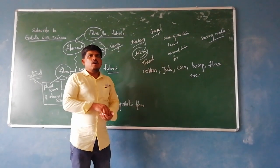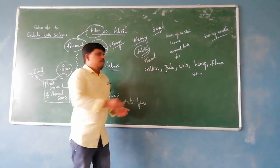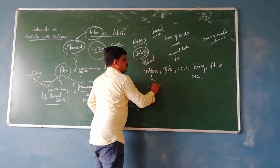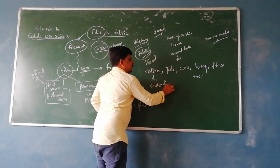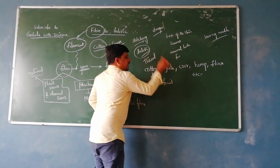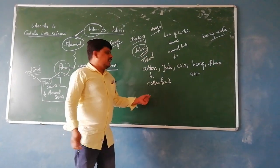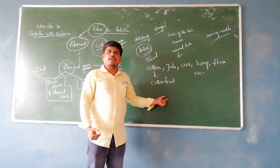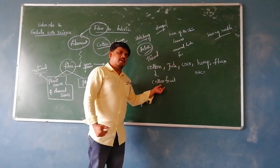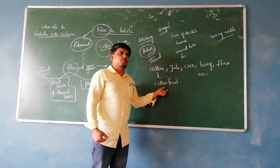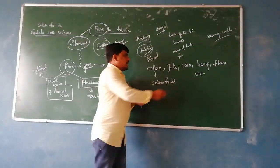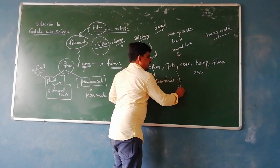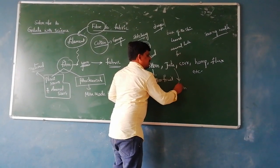As you know, cotton we get from the cotton fruit — that is a plant product. We use cotton fruit. We also use jute, specifically the jute stem.